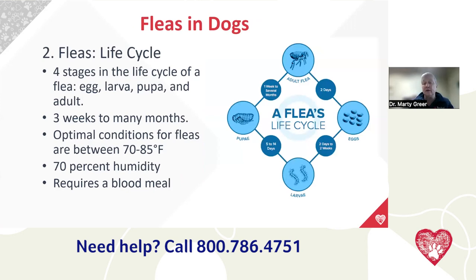Adult fleas need to take a blood meal to lay eggs. The female flea takes a blood meal, mates with the male, and produces eggs. The eggs are laid — sometimes on the pet's skin, sometimes they roll off and end up in your carpet or furniture. Two days to two weeks later they turn into larvae, which live in the carpet and furniture for another five to fourteen days, then turn into a pupa. A week to several months later, they turn into an adult flea.